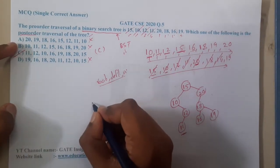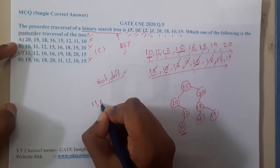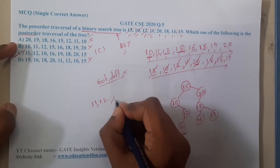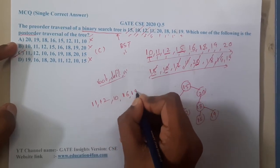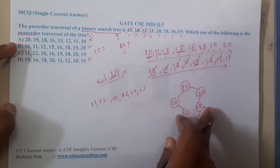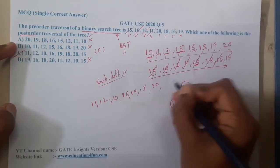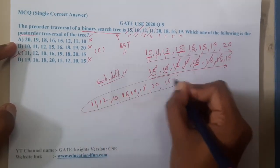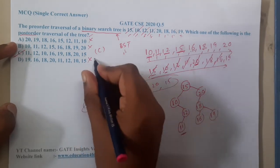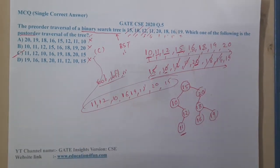If you want me to write the postorder traversal, it is: 11, 12, 10, 16, 19, 18, 20, 15. You can compare it with option C. So now you got an idea how I am solving it.